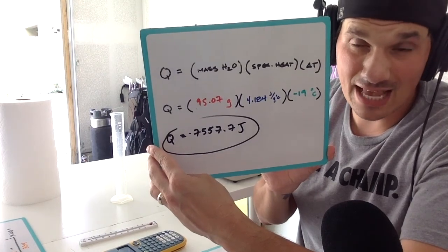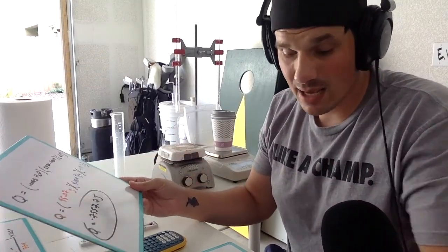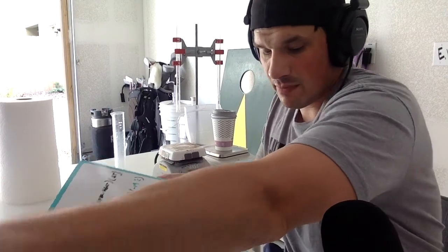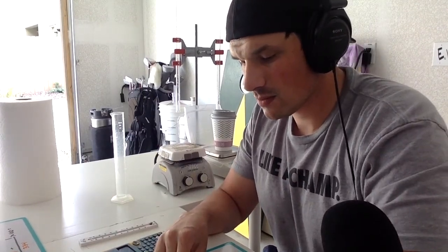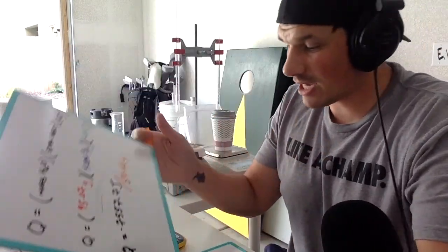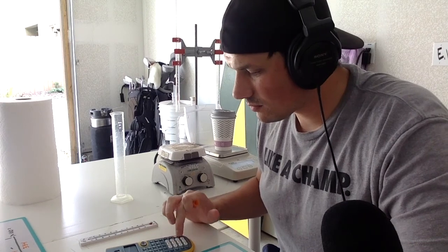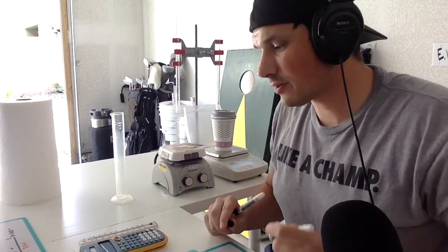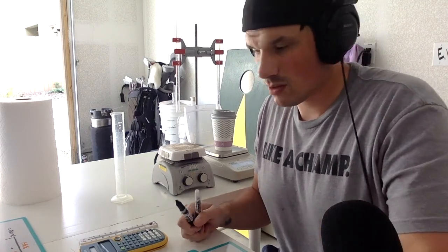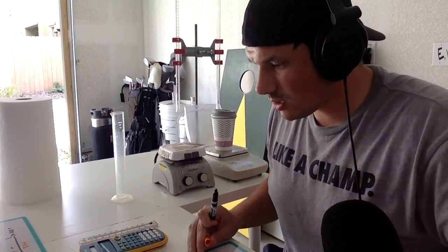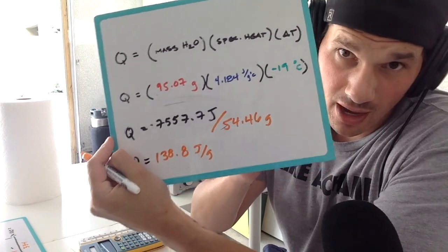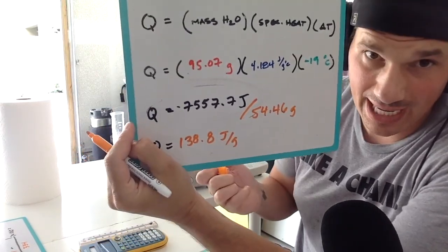So how we're going to find the Delta HF, let's take that 7,557.7 and let's divide by the mass of ice. So we're gonna erase a couple things first. Let's divide by 54.46 grams. That's going to be our Delta HF there. And I got a huge error here, but it's to be expected. So I get about 138.8 joules per gram. That's my heat of fusion of ice. Okay. So that's how much energy is needed to melt the ice.